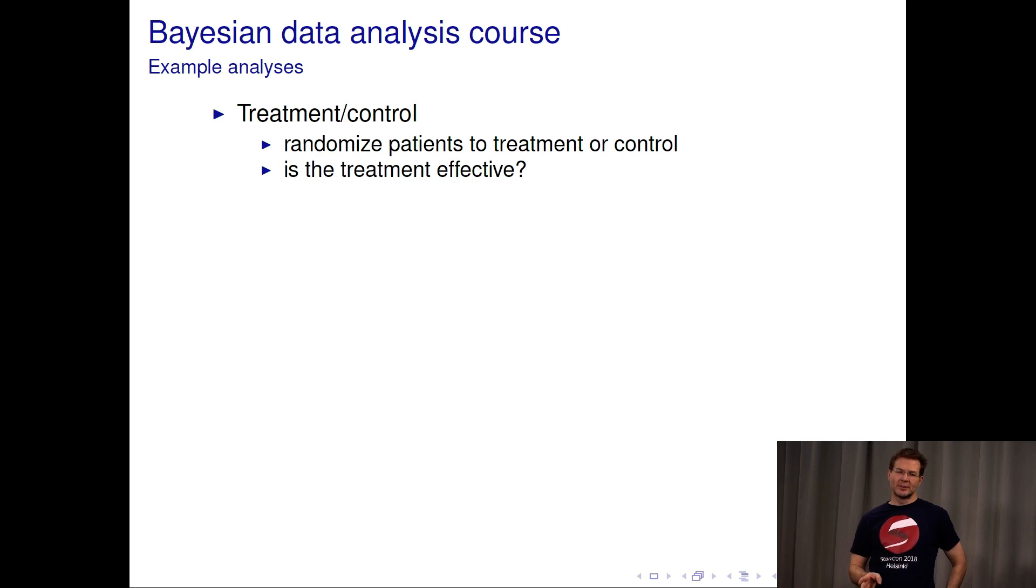In this course you will learn to do different types of typical data analysis used in science and industry. For example, treatment control: we randomize patients to treatment and control groups and then we want to know whether the treatment is effective. Instead of patients, this is close to AB testing where you would have different types of websites and you would like to test which one users prefer.